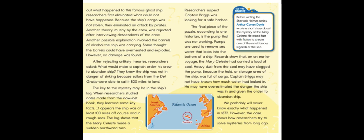Researchers suspect Captain Briggs was looking for a safe harbor. The final piece of the puzzle is the pump that was not working — pumps remove seawater that leaks into the bottom of a ship. Records show the Mary Celeste had earlier carried coal, and heavy dust may have clogged the pump. Because the storage area was full of cargo, Captain Briggs may not have known how much water had leaked in, overestimated the danger, and given the order to abandon ship. We will probably never know exactly what happened in 1872, but the case shows how researchers try to solve historical mysteries.